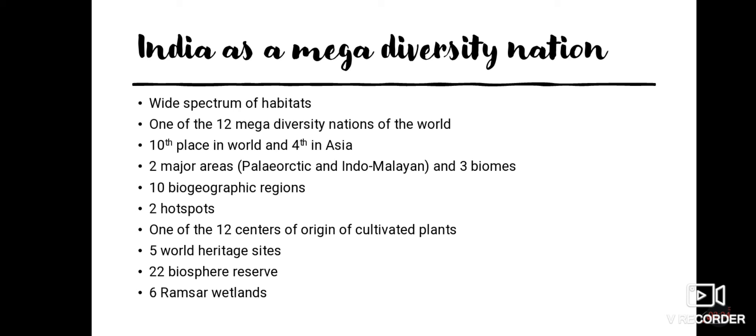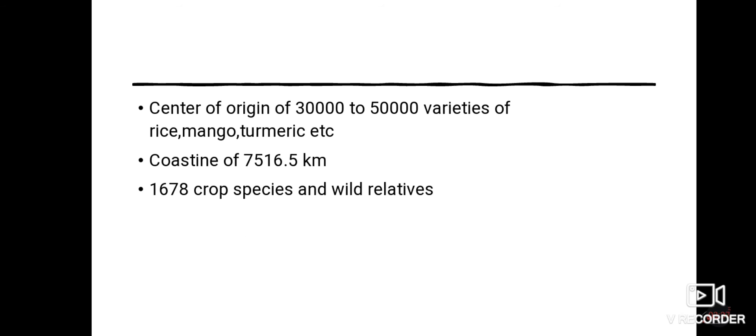India has 12 megadiversity regions, 2 major areas, 3 biomes, 10 biographical regions, 2 hotspots, 22 biosphere reserves, and 6 Ramsar wetlands. In addition, India is a center of origin for 30,000 to 50,000 varieties of rice, mango, and turmeric. We have a coastline of about 7,516.5 kilometers and 1,678 crop species along with wild relatives of those species.